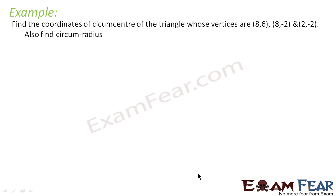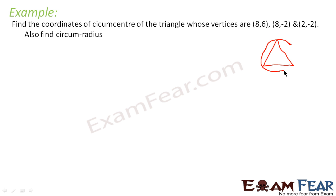The next question says: find the coordinates of the circumcenter of the triangle whose vertices are (8,6), (8,−2), and (2,−2). We also have to find the circumradius. The circumcenter is the center O of a circle that passes through all three vertices of the triangle.